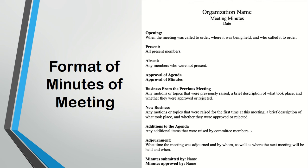New business: after referring to the previous meeting, this meeting's agenda is mentioned — any motions or topics raised, description of what took place, and whether they were approved or rejected. Additions to the agenda cover any additional items raised by committee members — jo member at the spot koi point raise karta hai usko bhi agenda mein shamil kar liya jata hai aur meeting ke minutes us ka hissah ban jata hai. Adjournment covers what time the meeting was adjourned and by whom, as well as where and when the next meeting will be held. Minutes submitted by — yahan par minute taker ka naam aata hai — aur minutes approved by is the person who chaired that meeting.